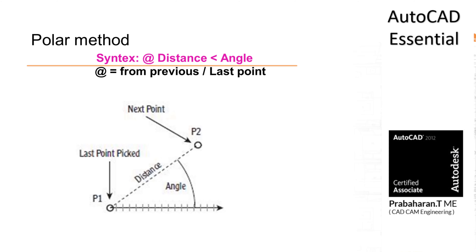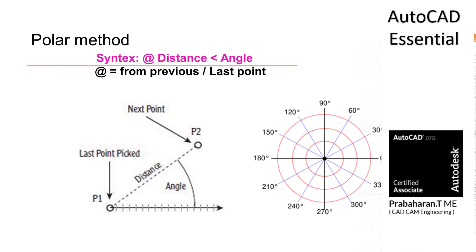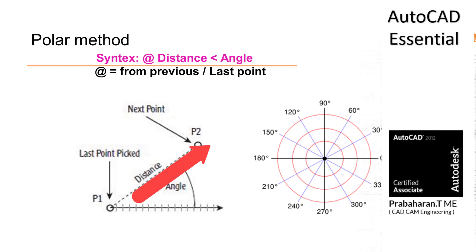Let us discuss what is the distance here. Distance means the distance of the line — that means a line will have two points, and the gap between the two points is called distance. What is meant by angle? Angle means it is an absolute angle. As usual, we are following the anticlockwise direction, measuring the angle from the right side. Anticlockwise direction is called positive angles. We are going to fix the point based on the distance of the line and the direction of that line from the previous point.